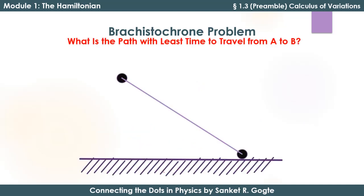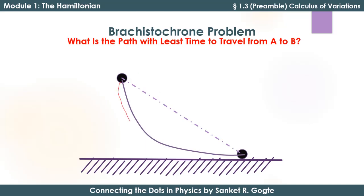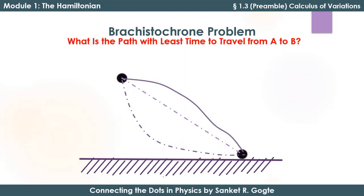One simplest possibility is that the two points are connected by a straight line — a plane — so you set up a ramp and leave a body at A so it moves under gravity towards point B. There is also a second path, a curved path, such that the body accelerates more in the early region because the slope is steeper, and later moves with less acceleration. A third possibility is where the body moves with less acceleration initially but acceleration increases as it goes further down the ramp.